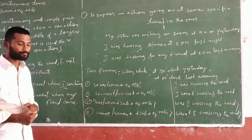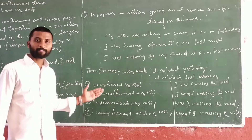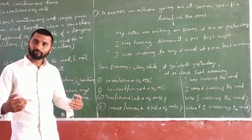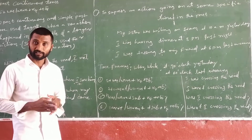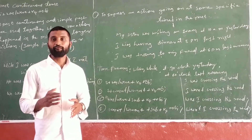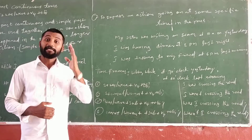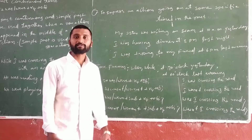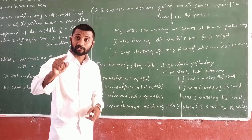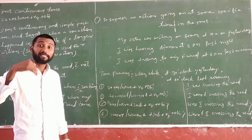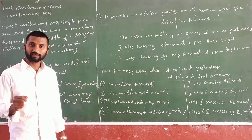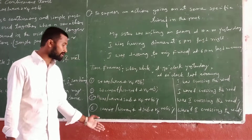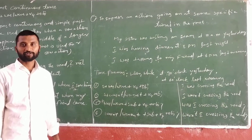If you see the structures: the positive structure is subject + was/were + V4 + object. The negative structure is subject + wasn't/weren't + V4 + object. The interrogative positive structure is: was/were + subject + V4 + object? The interrogative negative structure is: wasn't/weren't + subject + V4 + object? These are the four structures used in past continuous tense.